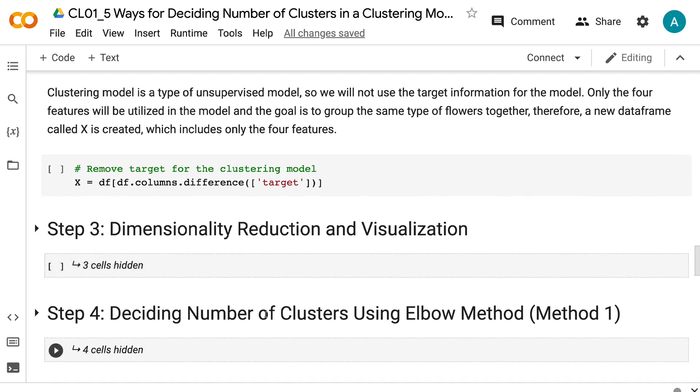Clustering model is a type of unsupervised model. So we will not use the target information for the model. Only the four features will be utilized in the model and the goal is to group the same type of flowers together. Therefore, a new dataframe called X is created, which includes only the four features.